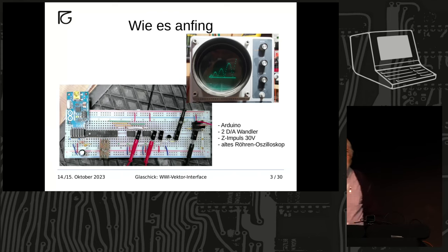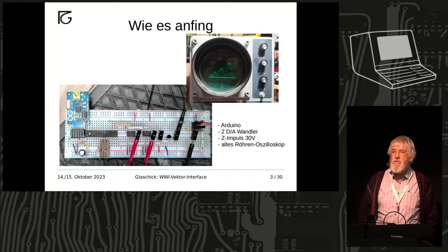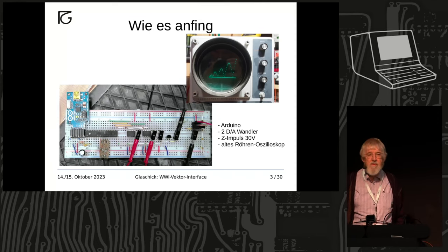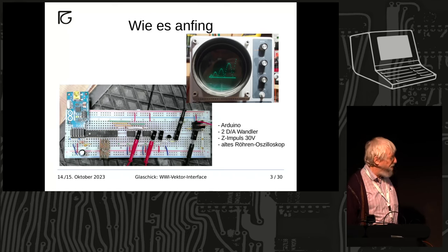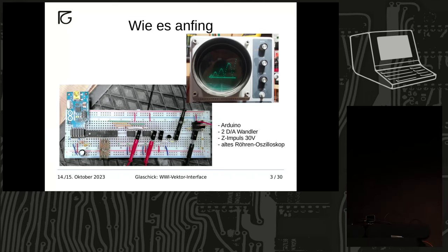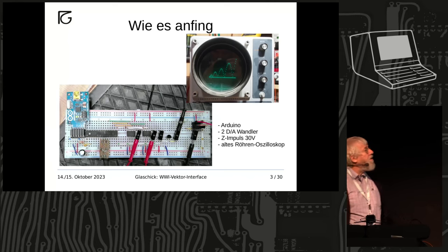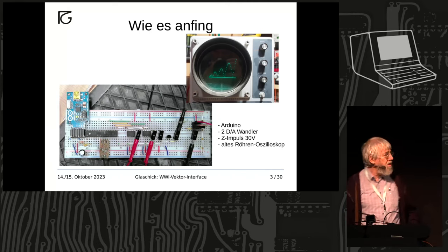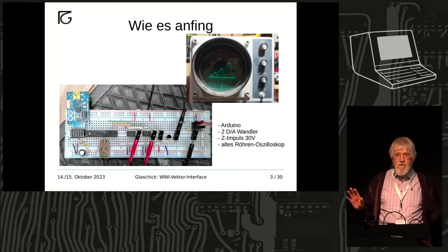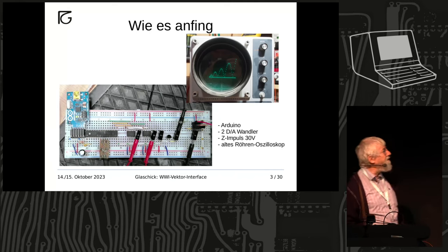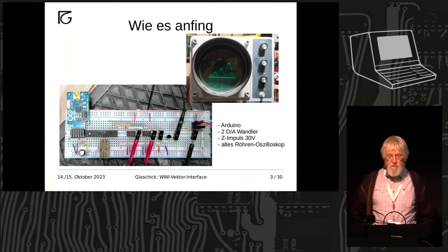Wie alles begann: Ich setzte mich einfach in meinen Keller und fragte mich, wie sieht das eigentlich aus, wenn ich so ein Punktdisplay wie vom Wildwind anzeige. Dafür habe ich mir mit einem Arduino einen Digital-Analog-Wandler gebaut und einen Spannungskonverter, weil ich mein uraltes IO12-Diskit verwendet habe — ein reines Röhrenoszilloskop. Und da fand ich den springenden Ball, selber geschrieben, nicht der Originalcode. Da war ich so begeistert, dass ich sagte: das müssen wir perfektionieren.